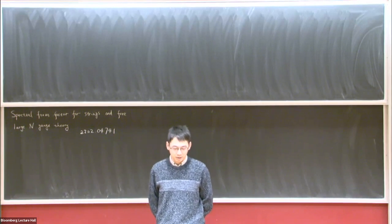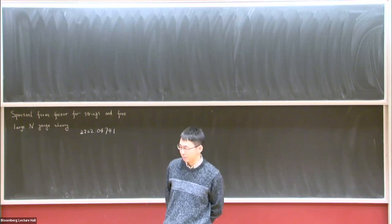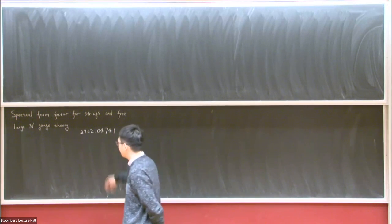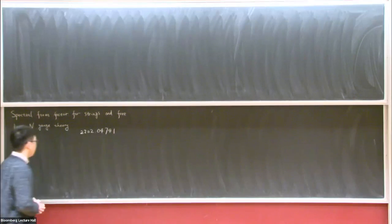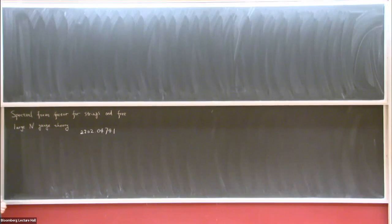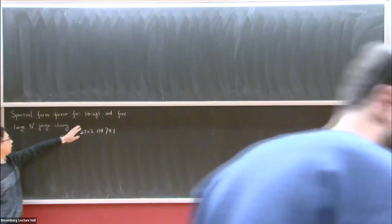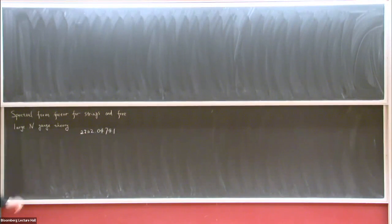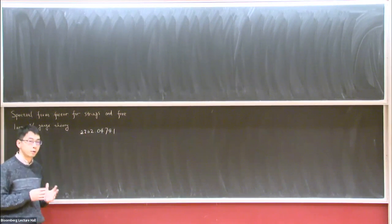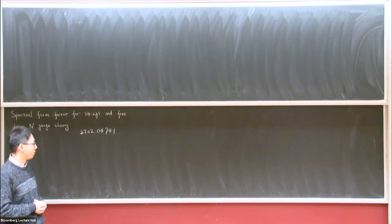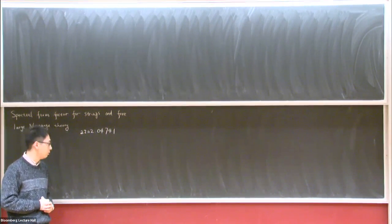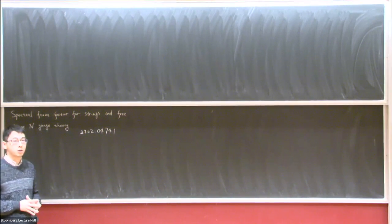I'll be talking about a recent exercise where I looked at the spectral form factor for some simple quantum mechanical systems involving highly excited strings and large-N gauge theory. The motivation for looking at these theories comes from thinking about problems about black holes, so let me first say a few words about black holes.